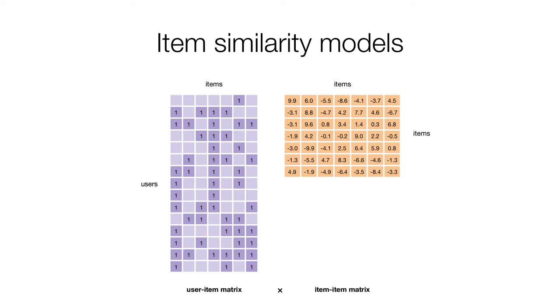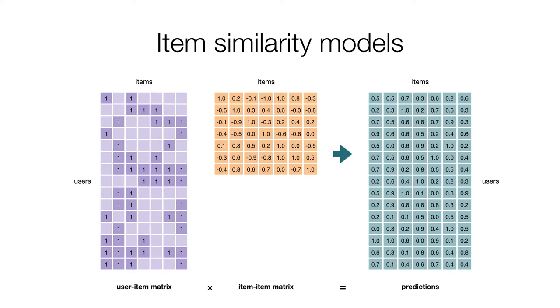A very simple family of collaborative filtering models is item similarity models. These models compute some kind of item-to-item similarity, which can then be used to generate recommendations. In the most straightforward case, these recommendations are generated by simply multiplying the user-item matrix with the similarity matrix. And the resulting matrix is going to be dense. It contains a non-zero score for every pair of user and item.